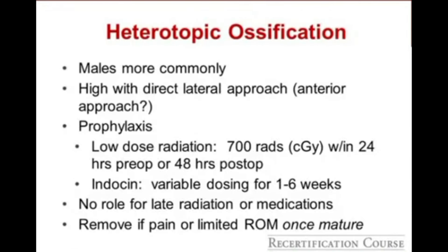Heterotopic ossification is more common in males and has been associated with the direct lateral and potentially anterior approaches. Prophylaxis can be done with low-dose radiation at 700 rads either within 24 hours prior to surgery or within 48 hours after. Indomethacin or other NSAIDs for 1 to 6 weeks after surgery have also been used. There is no role for late radiation or medications — if heterotopic ossification is already forming at two or six weeks, you must let the process run its course.